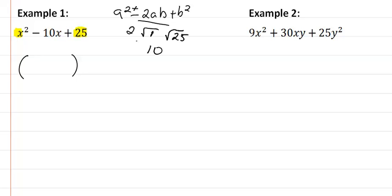Well, it just so happens it does, the square root of, we have 2 times 1 times the square root of 25, which would be 5, that gives me 10. That means that it is a perfect square trinomial.